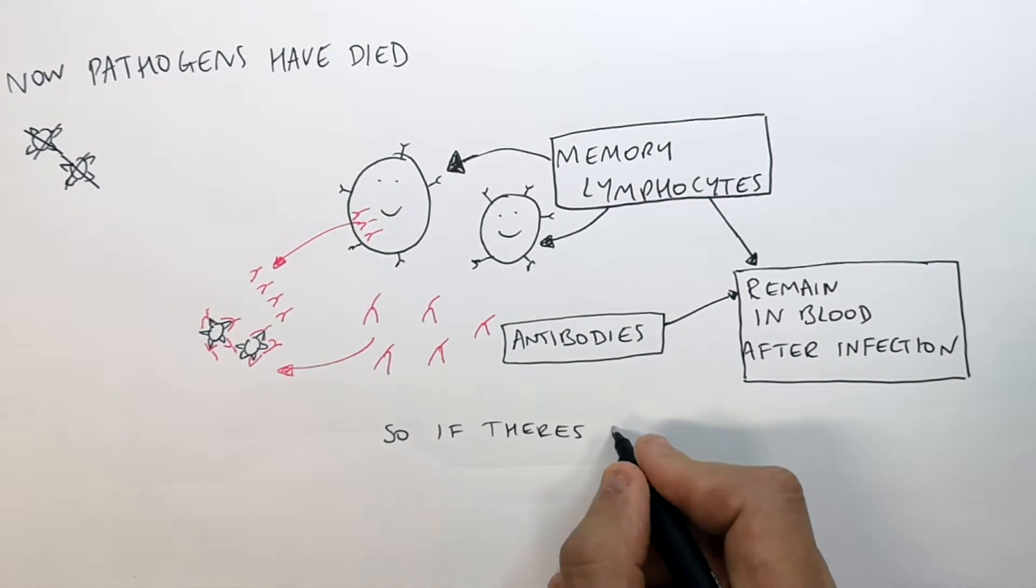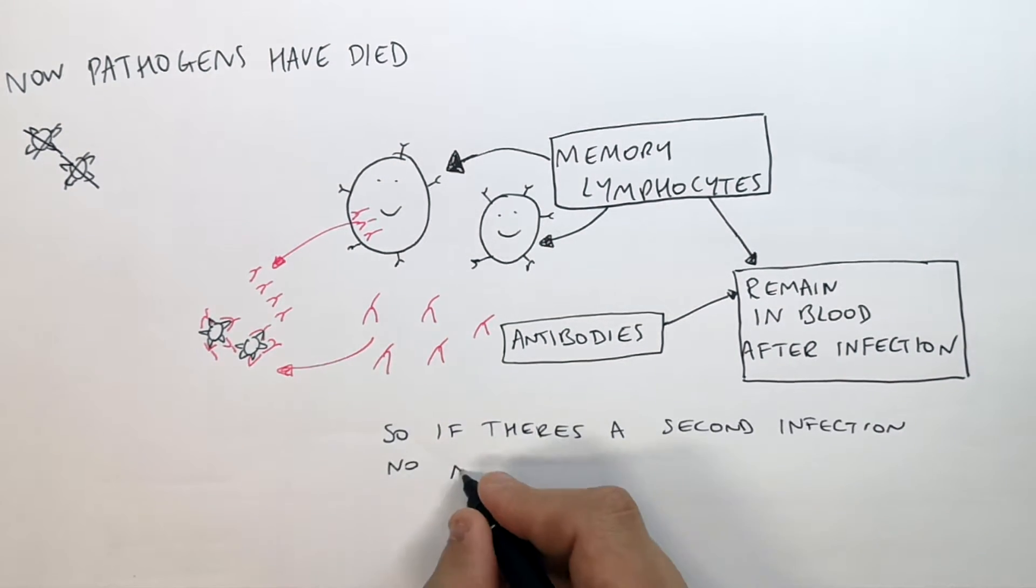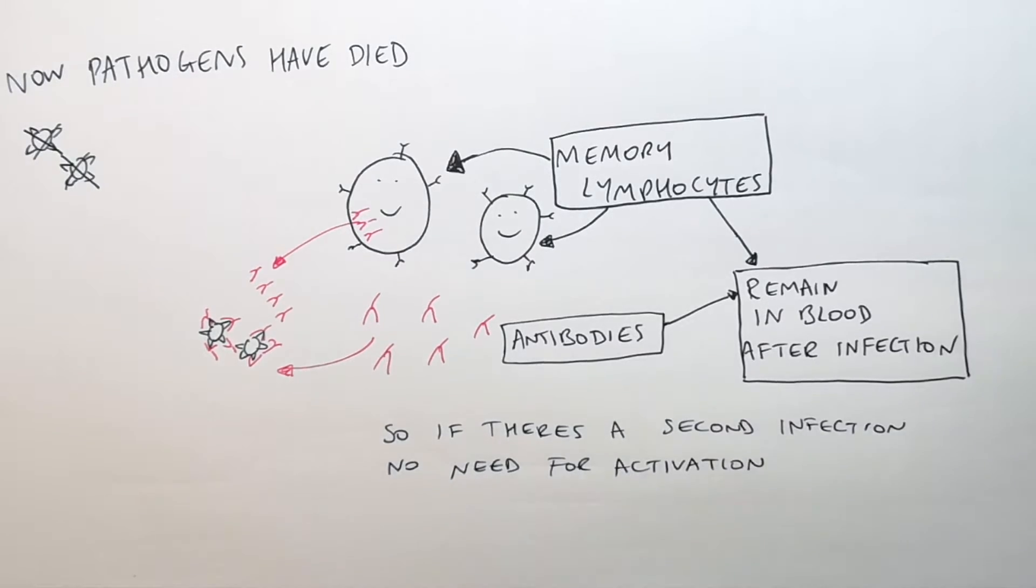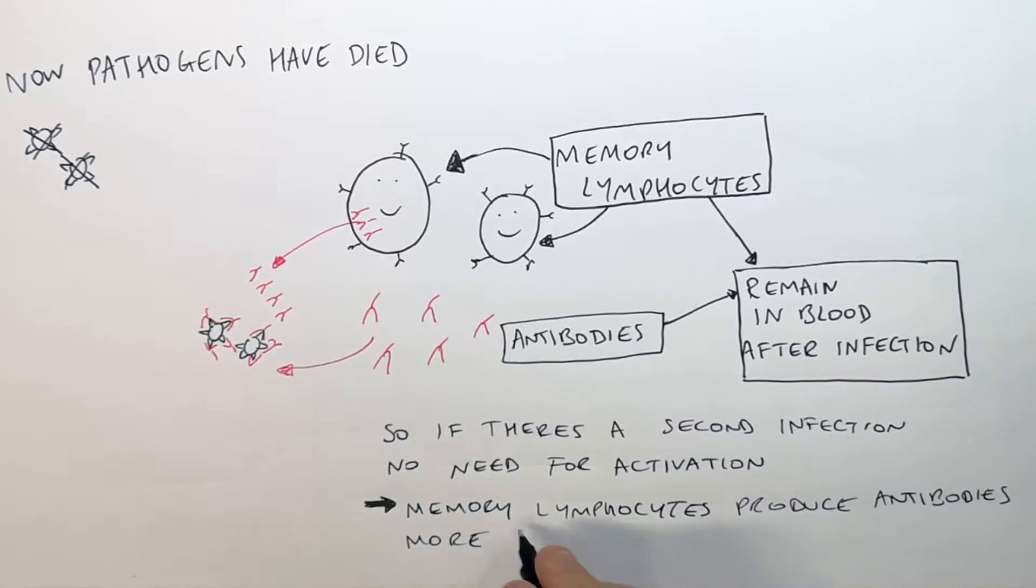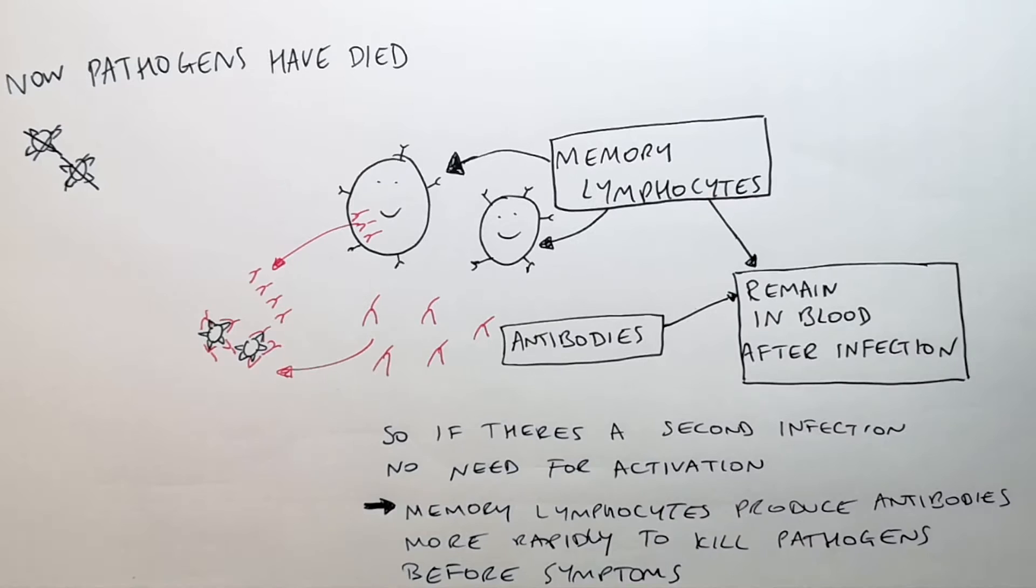So if there's a secondary infection, no need for activation of lymphocytes. Therefore, the memory lymphocytes are going to produce antibodies more quickly to kill the pathogens before symptoms can take place.